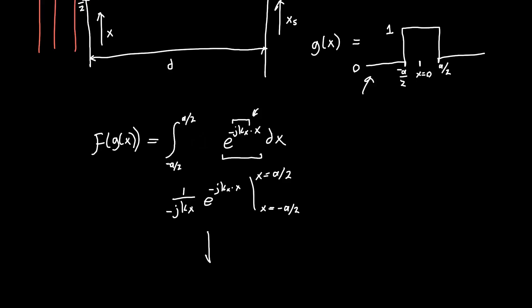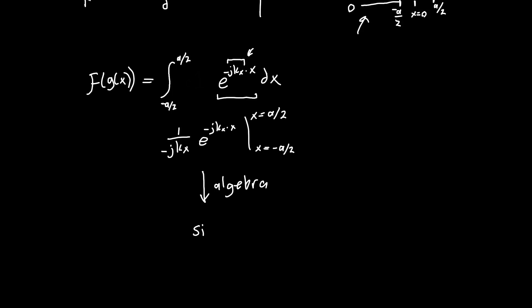After doing a bunch of algebra, you'll eventually come to the conclusion that the Fourier transform of this function is just a sinc function. So sinc of kx times a over 2. And sinc here is, if you haven't seen it before, you can look it up, but it's just defined as sin x over x, where x is the argument.